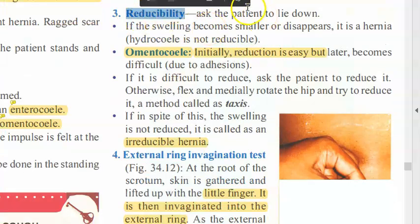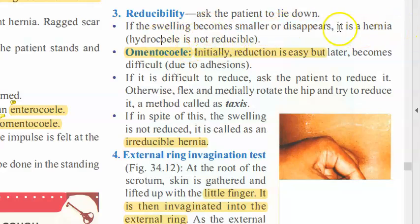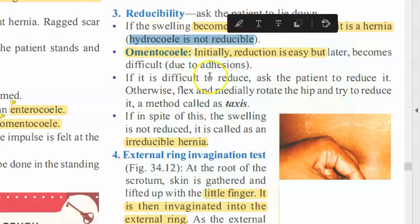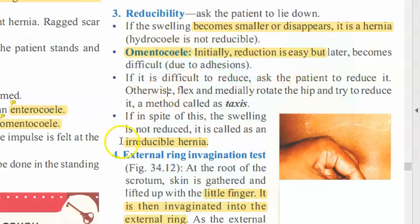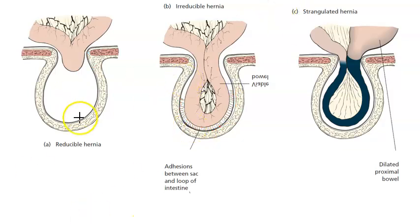Reducibility: ask the patient to lie down and see whether the size of the swelling becomes smaller. If it reduces it can be a hernia, but if it is a hydrocele it will not reduce. It is best to ask the patient to reduce it themselves as they are accustomed to doing so. For omentocele, initially you can reduce it, but later because of adhesions you will not be able to reduce it.